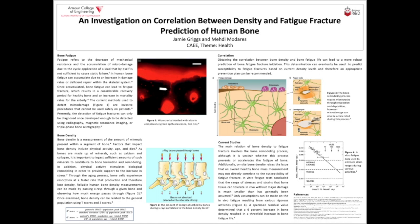Reliable human bone density measurements can be made by passing X-rays through a given bone and observing how much energy passes through. The absorption of this energy corresponds to the density of bones such that as bone density increases, more mineral content is present within the bone to absorb energy, as illustrated in Figure 2. Once bone density has been examined, it can be related to the general population using T-scores and Z-scores. T-scores compare the average peak bone mass by gender, whereas Z-scores compare it by age.